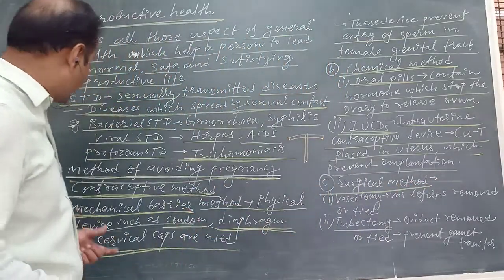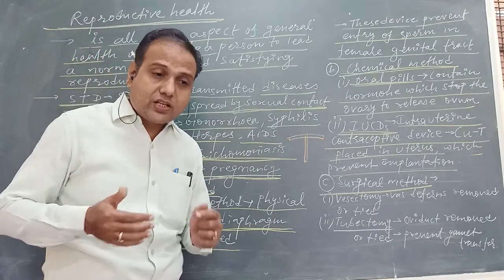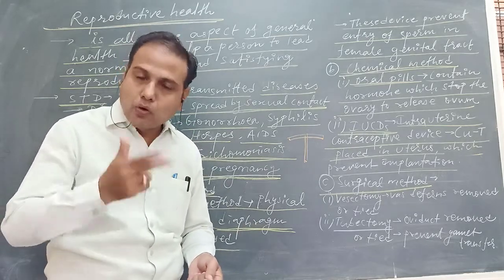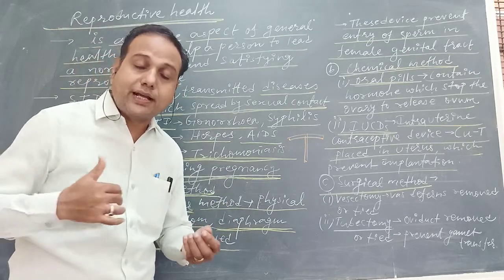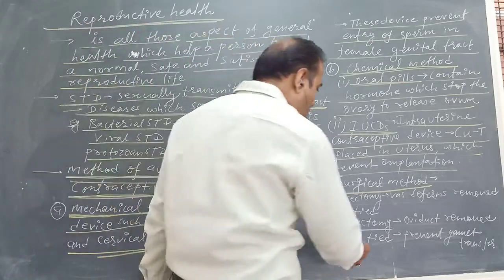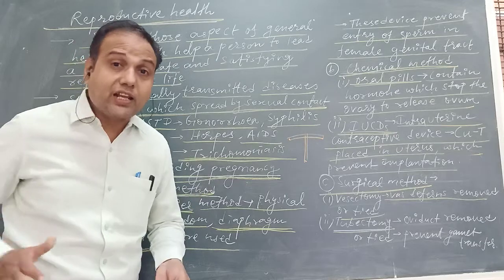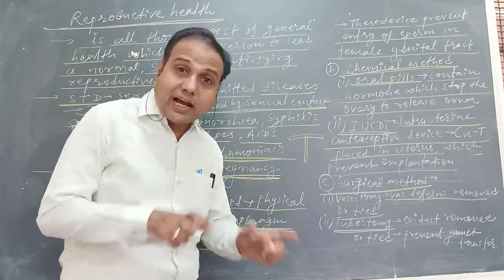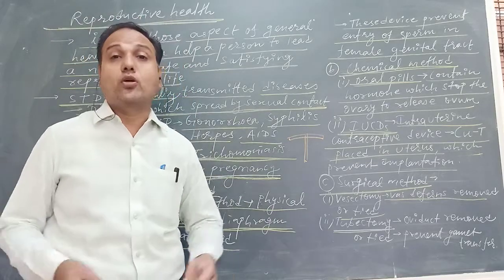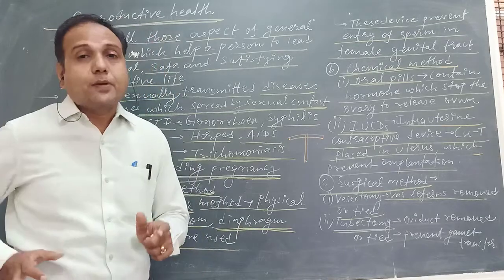The third method is the surgical method. In males, the tube that carries sperm from the testis to outside — the vas deferens — is cut, removed, or tied. This procedure is called vasectomy, and it prevents ejaculation of sperm. In females, the tube known as the oviduct or fallopian tube, which carries the ovum from the ovary, is cut, removed, or tied — this is called tubectomy. Both vasectomy and tubectomy prevent the release of gametes outside the gonads, thereby preventing fertilization.